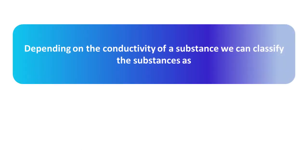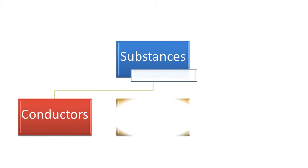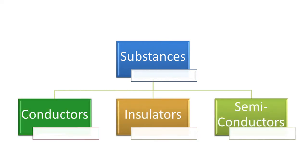Depending on conductivity, we classify substances as conductors, insulators, or semiconductors. Conductors have high conductivity, insulators have very low conductivity, and semiconductors have moderate conductivity — in between conductors and insulators.